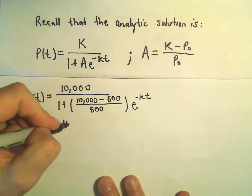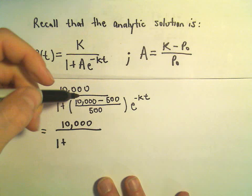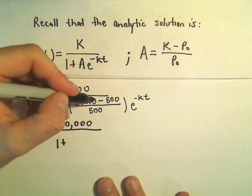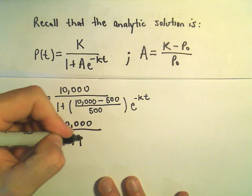Alright, so you can check my arithmetic here. This is 10,000. 10,000 minus 500 would be 9,500. 95 divided by 5 is going to be 19.